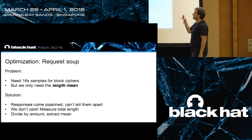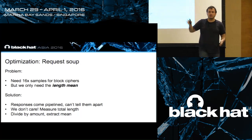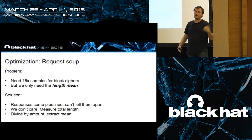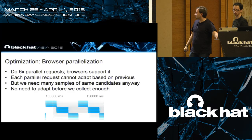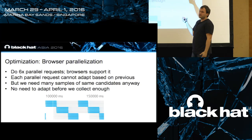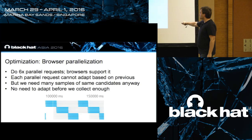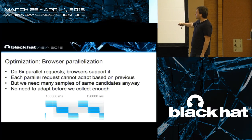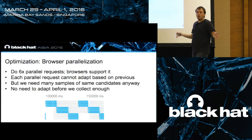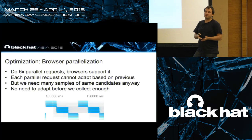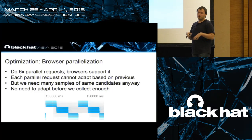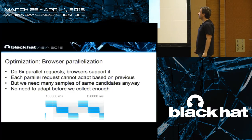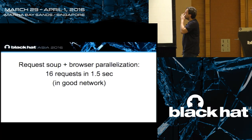With request soup alone the browser pipelines requests one behind another, but combining it with browser parallelization - our third optimization - we note that browsers can send up to six requests in parallel. So we have six requests running in parallel, then six more, then six more. They're both pipelined and parallelized and we just measure the total length. We call it a soup because responses all come together and we don't distinguish them - we just measure the total length.